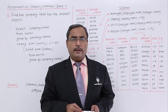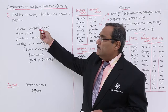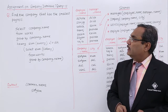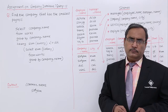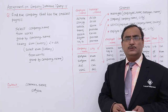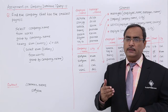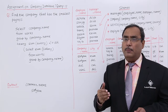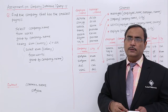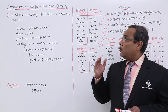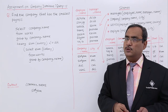Here we are with query number 11. This query asks us to find the company that has the smallest payroll. Payroll means the sum of the salaries of that particular company, and smallest means the minimum sum of the salaries has to be obtained.